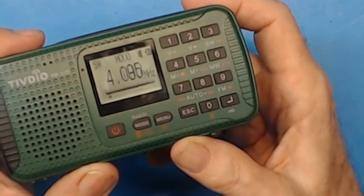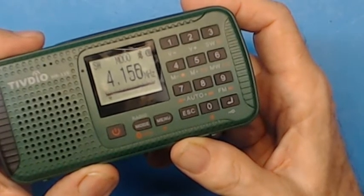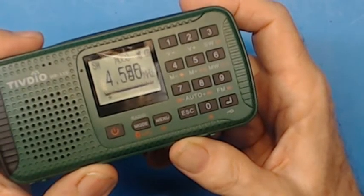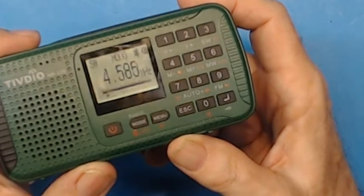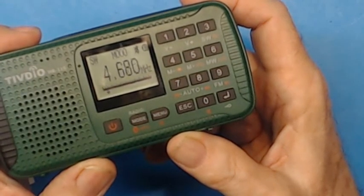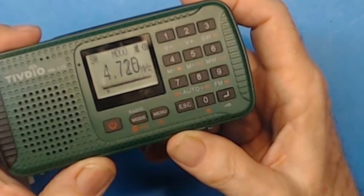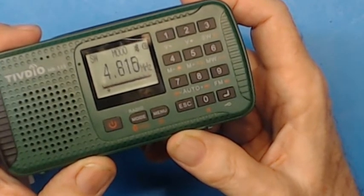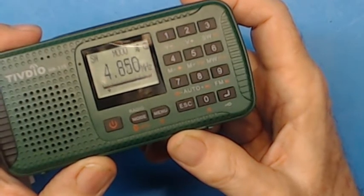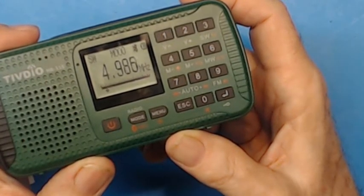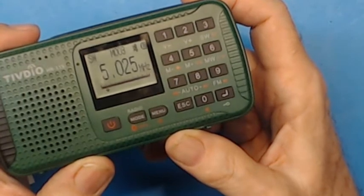We're going to run it a little more to see if it's only tuning the international broadcast bands, which to me is a negative. I wanted it to tune the entire shortwave band when using this feature. It's going up to 4.6, 4.7. Let's see if it goes to 5.0—that'll be the key. 4.8, 4.9, 5.0.